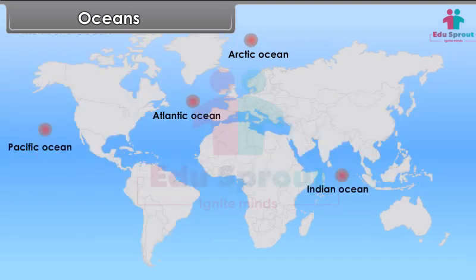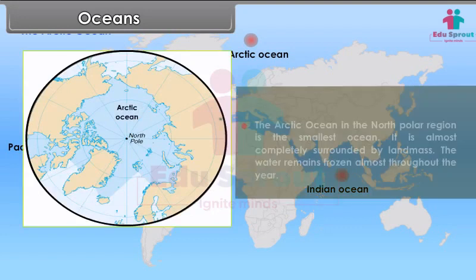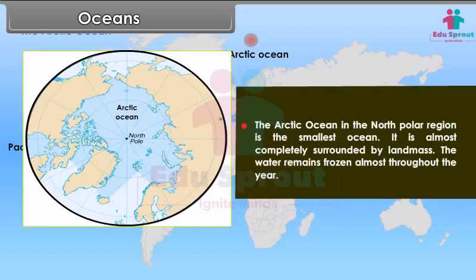The Arctic Ocean in the North Polar region is the smallest ocean. It is almost completely surrounded by land mass. The water remains frozen almost throughout the year.